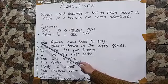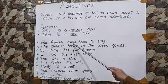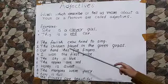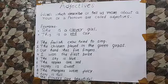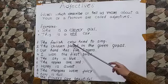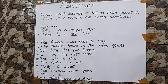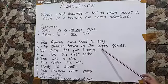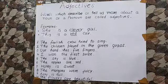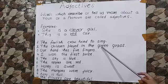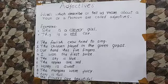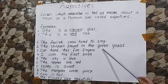Now children, let us see some more examples. The foolish crow tried to sing. Foolish tells us more about the noun crow, so foolish is an adjective in this sentence. The children played in the green grass. Green describes the color of the noun grass, so green is an adjective in this sentence.